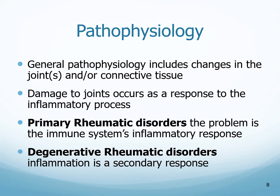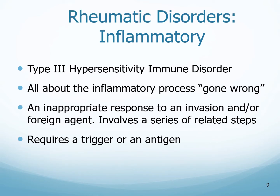There are also degenerative rheumatic disorders, where inflammation is a secondary response. We have all seen reports of degenerative joint disease, which is something that happens over time with the older adult population. A rheumatic disorder is a type 3 hypersensitivity immune disorder — recall that types 1 and 4 were discussed with allergic disorders. It is all about the inflammatory process going wrong; an inappropriate response to an invasion or a foreign agent.